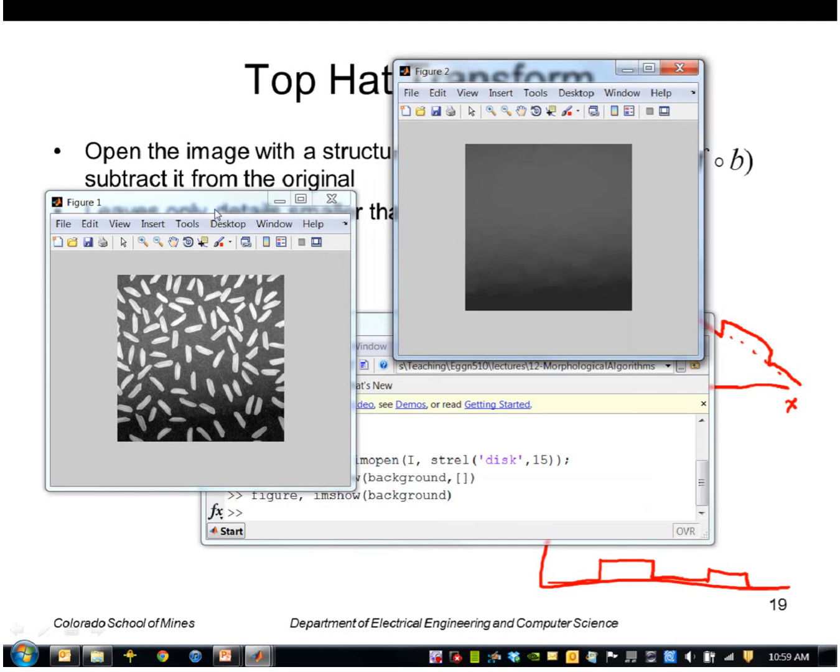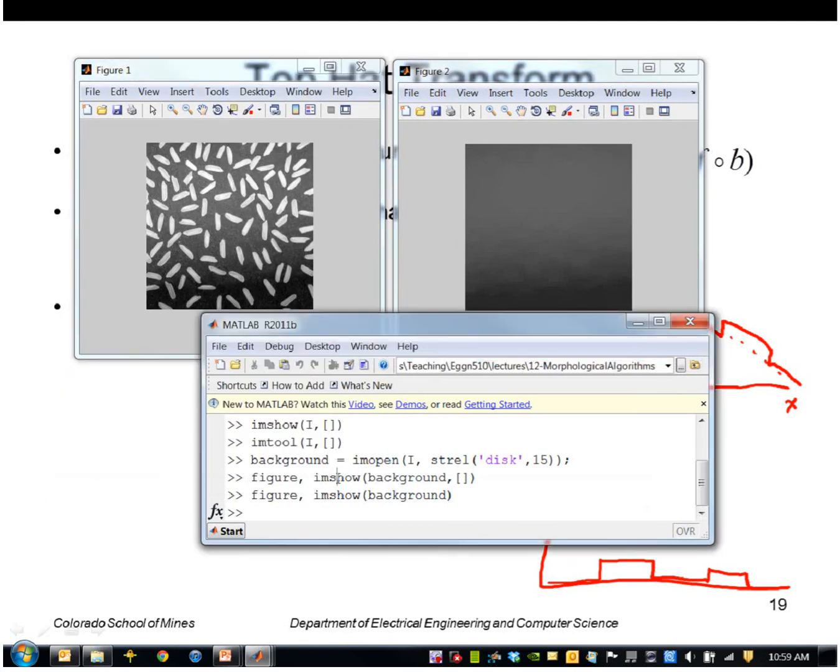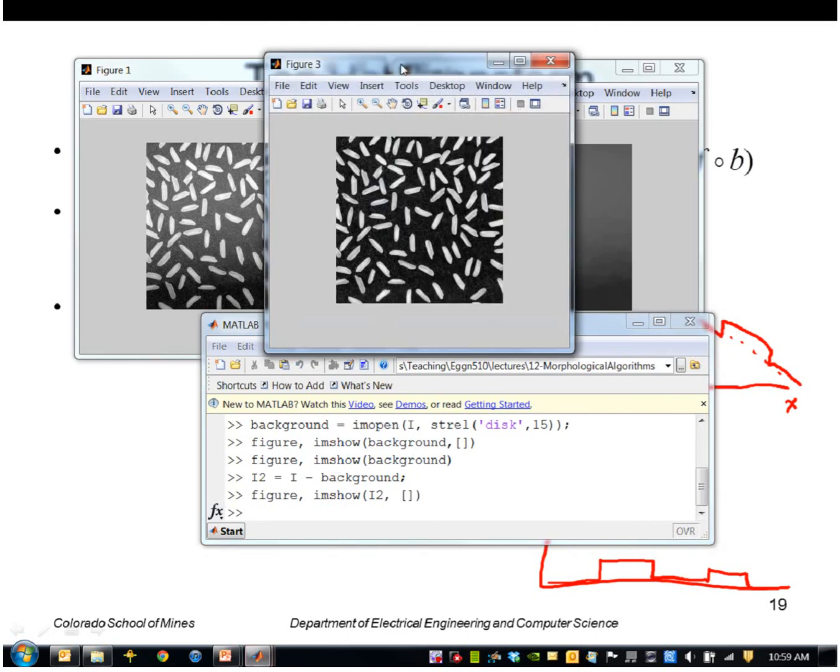It's smoothly varying. So if I subtract that from the original image that leaves me with just the rice grains.